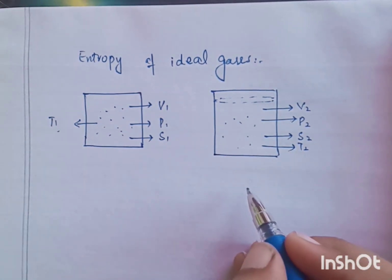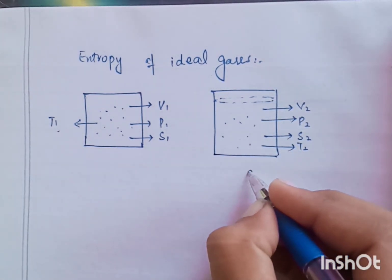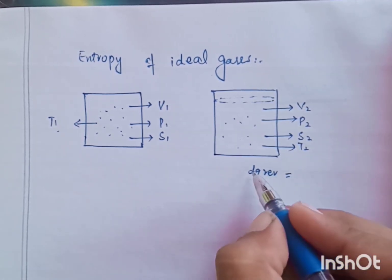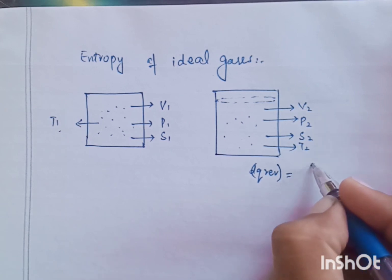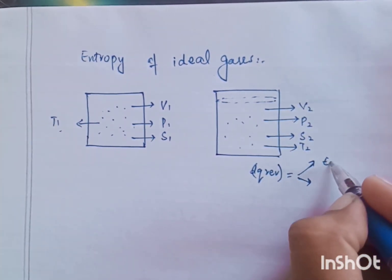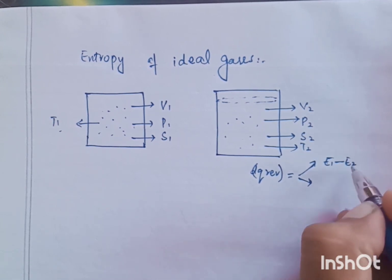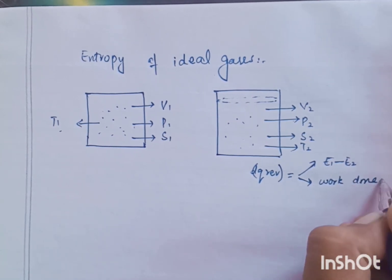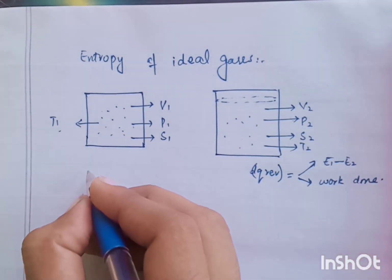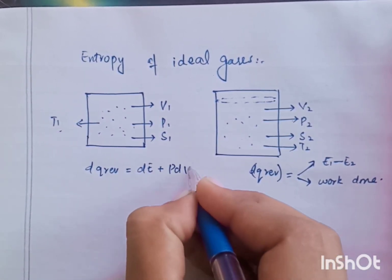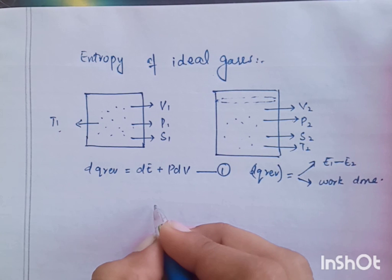We know that when we provide heat DQ reversible, then there occurs two phenomena. First internal energy changes, internal energy E1 to E2. Then also the work is done. Now we know that DQ reversible equals to DE plus PDV. This is equation number 1.